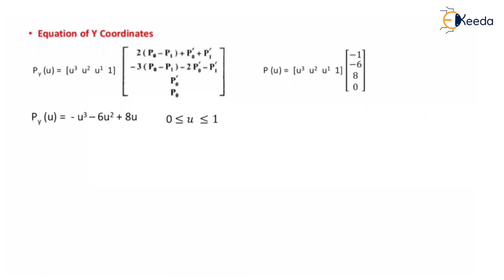Similarly, for the y coordinate, Py(u) = [u³, u², u, 1] multiplied by the same Hermite matrix structure with the y values. After substitution, we get the matrix row [-1, -6, 8, 0], so Py(u) = -u³ - 6u² + 8u, for u in [0, 1].